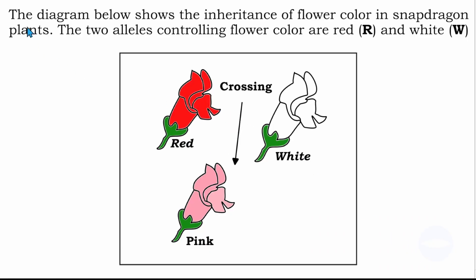Question number one. The diagram below shows the inheritance of flower color in snapdragon plants. The two alleles controlling the flower color are red, which is capital letter R, and white, which is capital letter W. We see a red flower and a white flower. When a red flower is crossed with a white flower, they produce a pink flower. This kind of dominance is called incomplete dominance, where we see an intermediate phenotype — the phenotype is different from the crossed phenotypes.